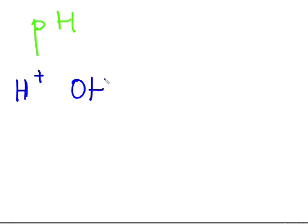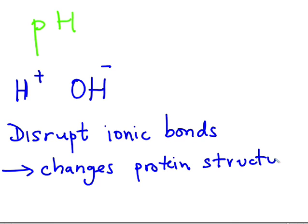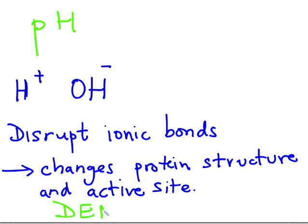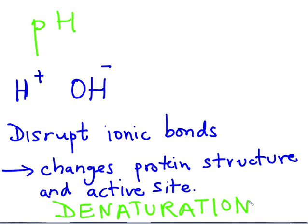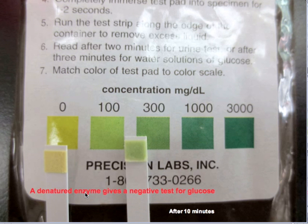pH can have a similar effect by introducing extremes of hydrogen and hydroxide ions. They disrupt ionic bonds. If ionic bonds get disrupted, the enzyme is denatured. And if the enzyme is denatured, no glucose can be produced.